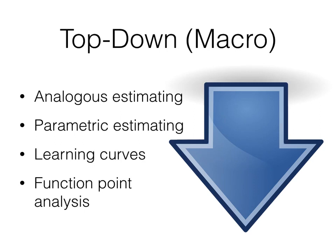Top-down estimates are used during project initiation to develop a quick estimate in order to determine if the project is feasible, to calculate funding requirements, and to determine the resources needed to complete the project. Top-down methods are not always as accurate as bottom-up methods, but they are usually much easier to calculate.